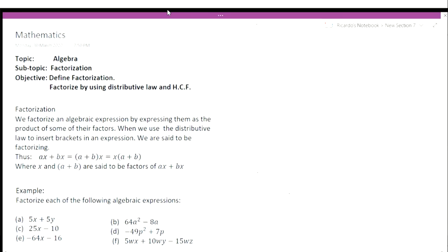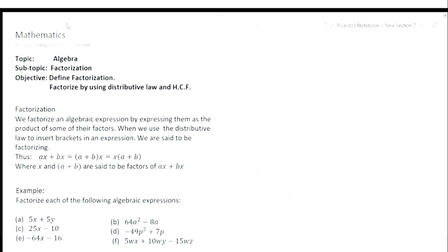So let's look at example one so we can expand on what we just said. So that is the example. The first thing we need to do is to find what is common between these two numbers. It is very evident that five is common between those two numbers. So we're going to do it the long way first, then we'll do it the short way so you can get an understanding and see the distributive law and the full understanding of what is taking place.